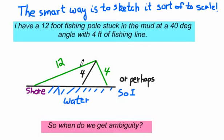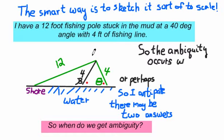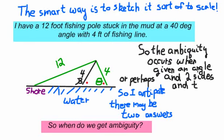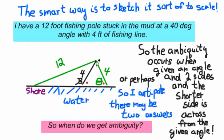You can anticipate there will be two solutions when you have a short side across from a known angle with another long side. The ambiguity occurs when you're given an angle and two sides, and the shorter side is across from the angle that you know — that's a pretty good clue that, provided the triangle actually exists, you're going to have an ambiguity problem.